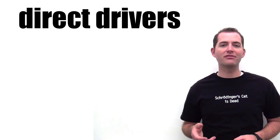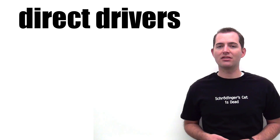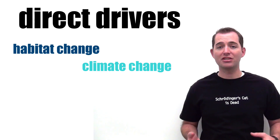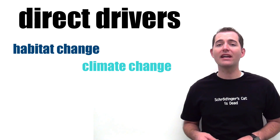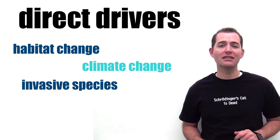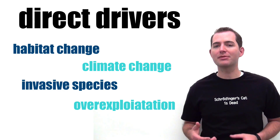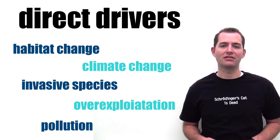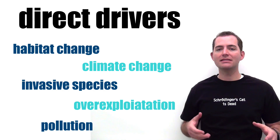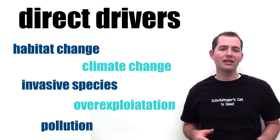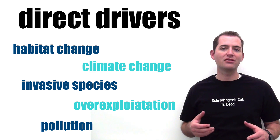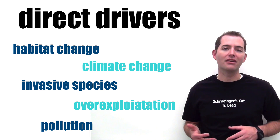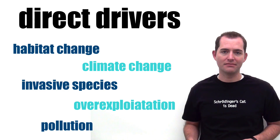Again, examples of direct drivers are habitat change, climate change, invasive species, over-exploitation, and pollution. Let's take a look at a few examples of direct drivers having an impact on an ecosystem.